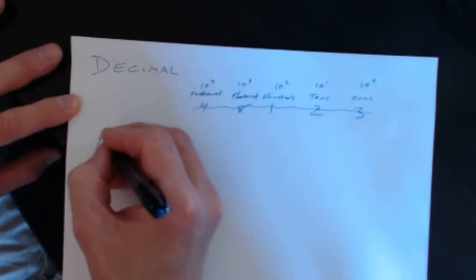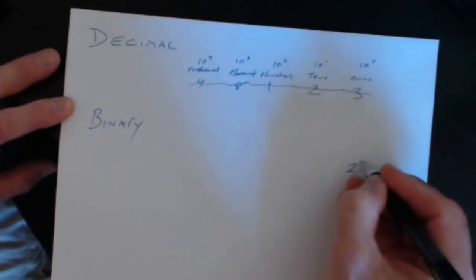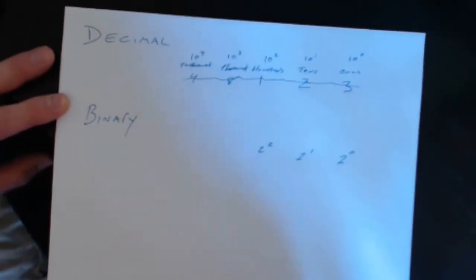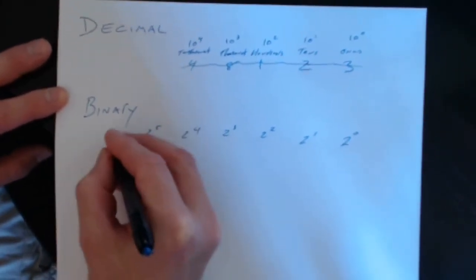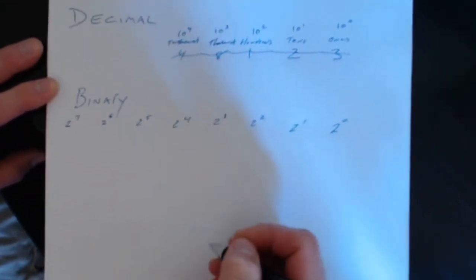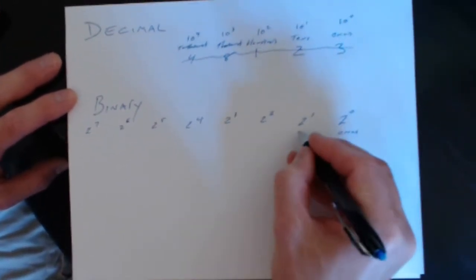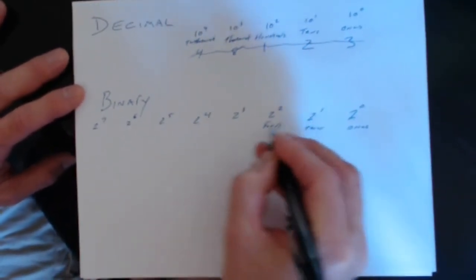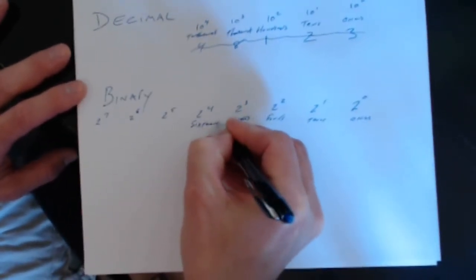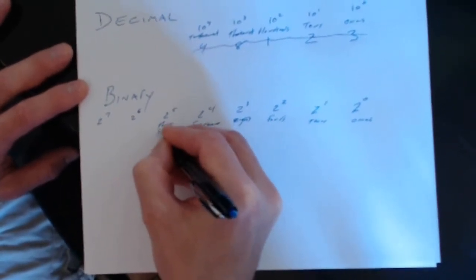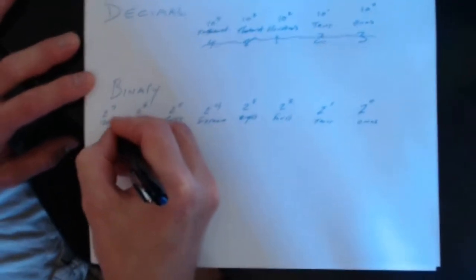How would we do that in binary? It's the exact same way, but we work with base 2. So we have: two to the zero, two to the one, two to the two, two to the three, two to the four, and we could keep going — two to the five, six, seven. Anything to the power of zero is the ones place; two to the one is the twos place; two squared is the fours place; then the eights place, the sixteenth place, the 32nd place, the 64th place, and the 128th place.